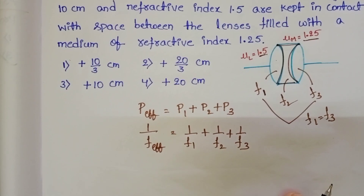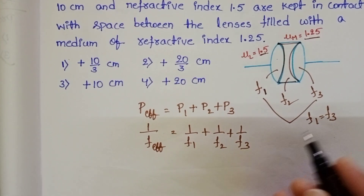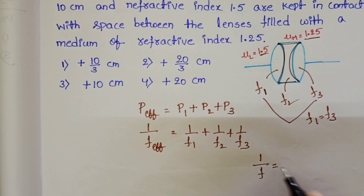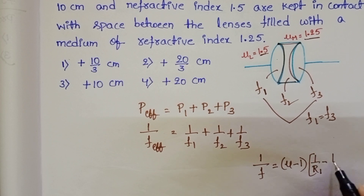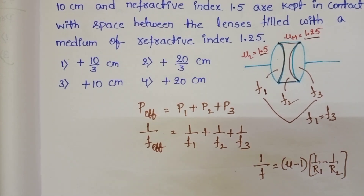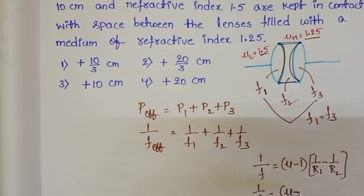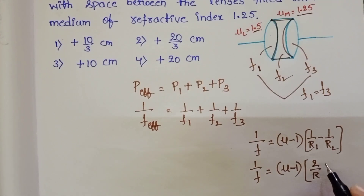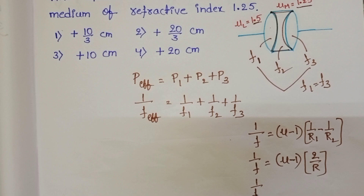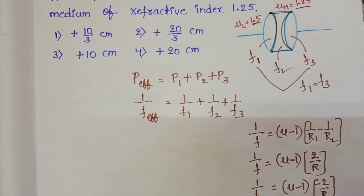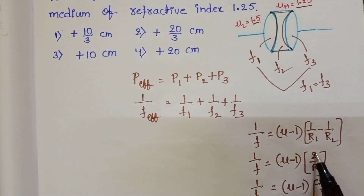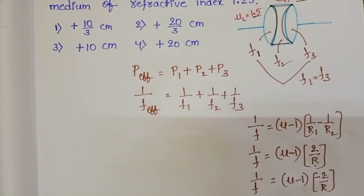To find the focal length, use the lens maker's formula: 1/f = (μ - 1)(1/R1 - 1/R2). For a convex lens, 1/f = (μ - 1) × 2/R. Remember the sign convention: convex gives +2/R and concave gives -2/R.